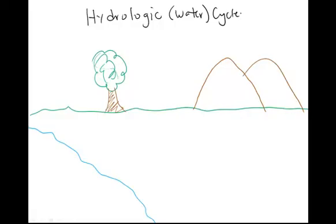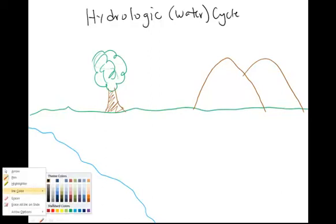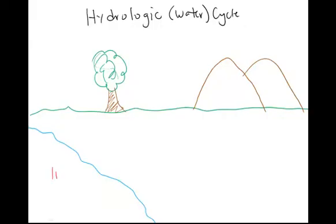And we're going to start with surface water on our planet. And remember, this could be a lake, a pond, a river, a stream. So this is liquid water here.